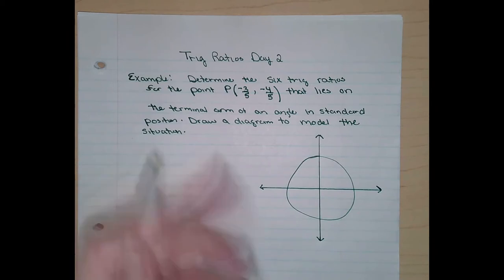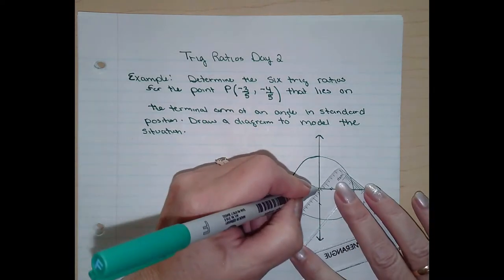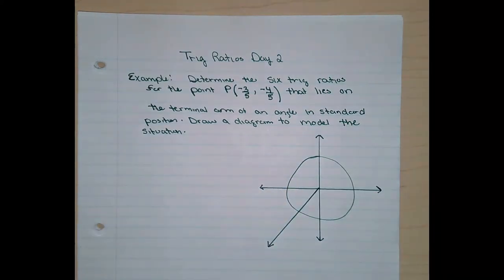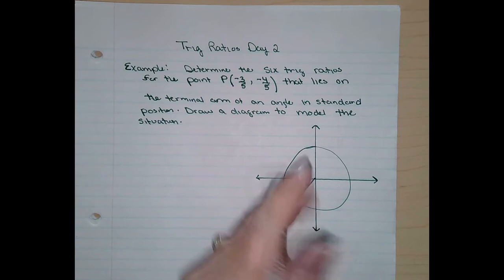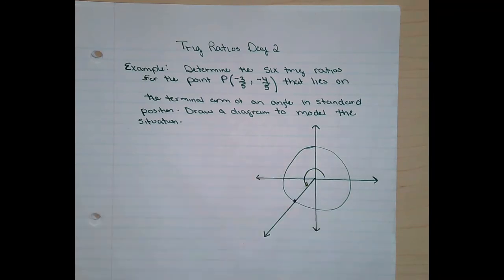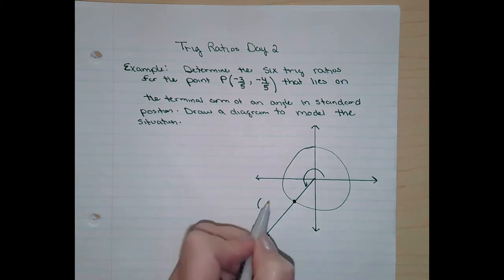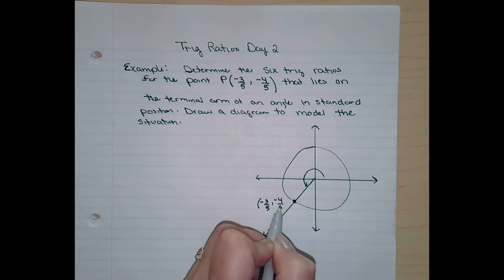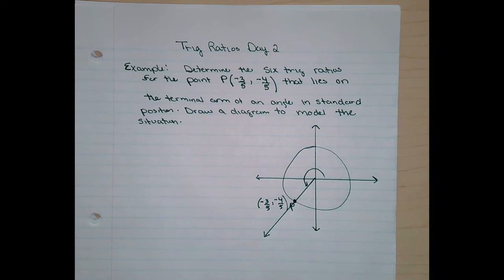What quadrant are we in? Three, right? My X and Y coordinates are both negative. I'm just going to extend the terminal arm out a bit. The intersection of the terminal arm of an angle measured in standard position and the unit circle — the coordinates right here are negative three-fifths and negative four-fifths. That's what they're calling point P, and those are the coordinates of that point.